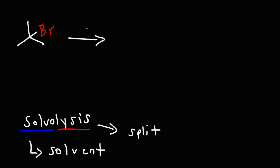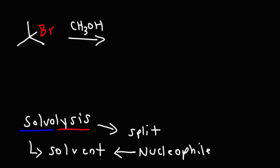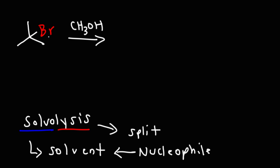In a solvolysis reaction, we're reacting the alkyl halide with the solvent. The solvent could be methanol, water, ethanol, or something else. In this solvolysis reaction, what you need to know is that the nucleophile is going to be the solvent. What are we splitting apart? We're going to break apart the carbon-bromine bond, splitting the molecule into two parts: a carbocation and a bromide ion. That's the lysis part — we break that bond using the solvent. Hence we have a solvolysis reaction: using the solvent to split apart this bond.